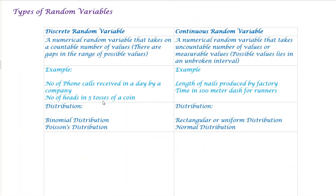We have two types of random variables. One is a discrete random variable, and another is a continuous random variable. Discrete means finite — a discrete random variable is a countable number. A continuous random variable is infinite.